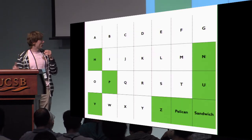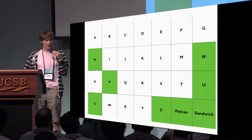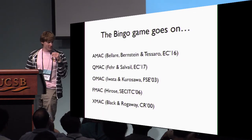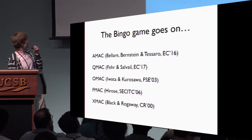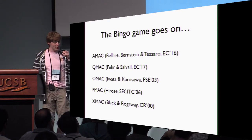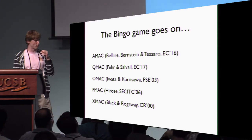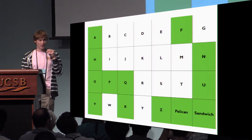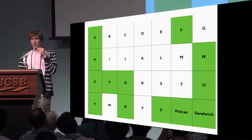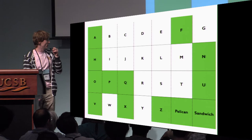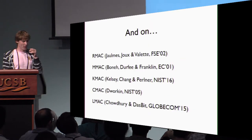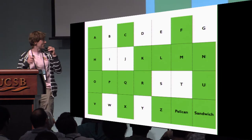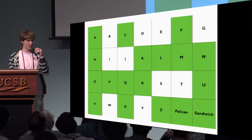So we already saw that these are taken, but it's not all because we can play this game and then we have AMAC, QMAC, OMAC, FMAC, XMAC — all of these are serious algorithms presented to prestigious conferences. So we get this really random-looking picture. There's no hidden image in it. But it goes on because we have then PMAC, MMAC, KMAC, CMAC, LMAC, which update the picture.